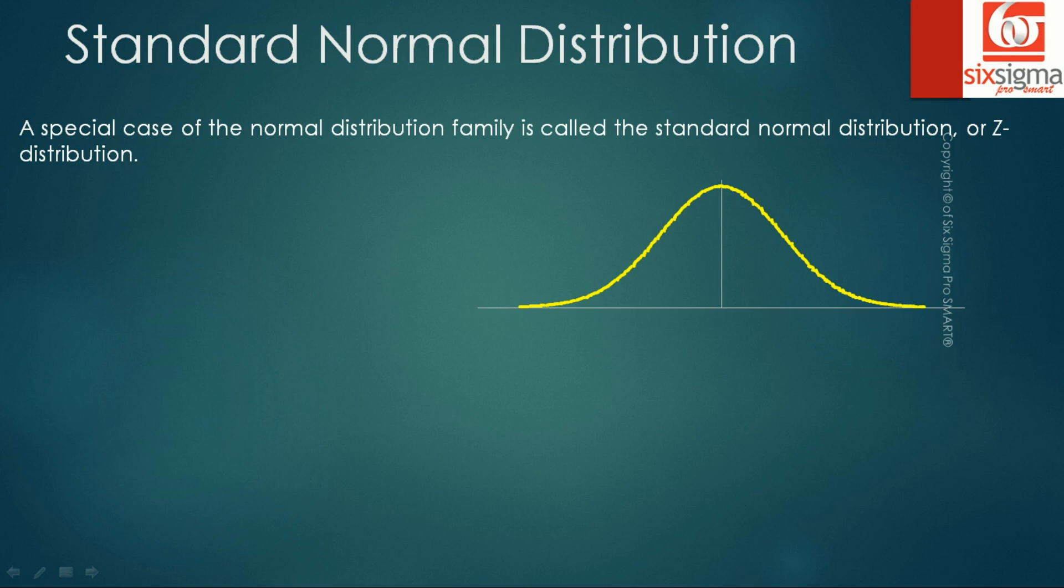Let's talk about a special case of the normal distribution family which is known as the standard normal distribution. As we discussed on the previous slide, a normal distribution is characterized by its mean and standard deviation. As there are infinite possibilities both for mean and standard deviation, it can attain any numeric value. You can imagine there can be infinite normal distributions. So in order to establish a standard or a bare minimum for common reference, the standard normal distribution came into picture. The characteristic of the standard normal distribution is that it has a mean of 0 and a standard deviation of 1.